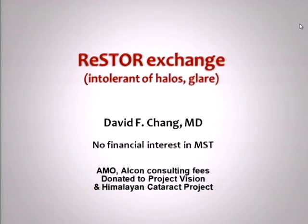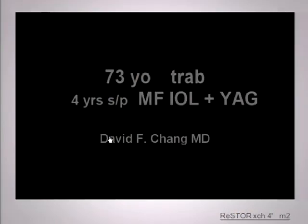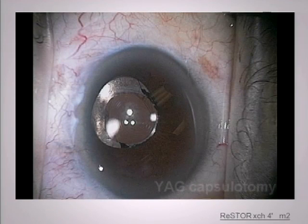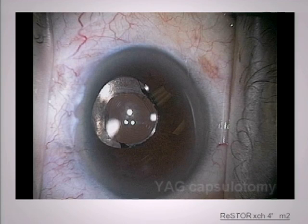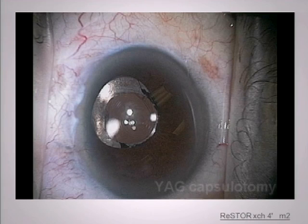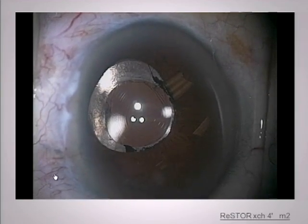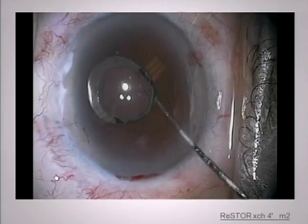I'm going to switch gears a little bit and show a case of an IOL exchange. This is a patient who's actually four years out following Restore. She has a trabeculectomy and, like many of these patients, has had a YAG capsulotomy. Here's the TRAB. This is after dilation, so you can see there's synechiae to this small rexis, and there's a YAG capsulotomy. We decided that this lens needed to come out — there are a lot of higher aberrations on the TRAC.